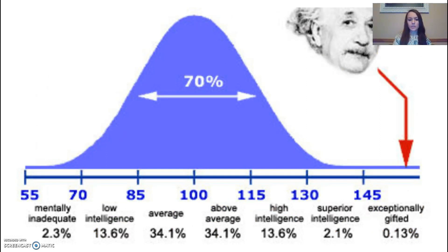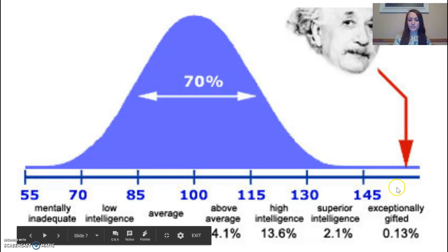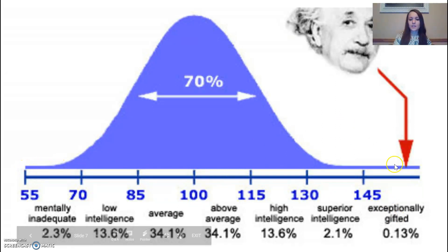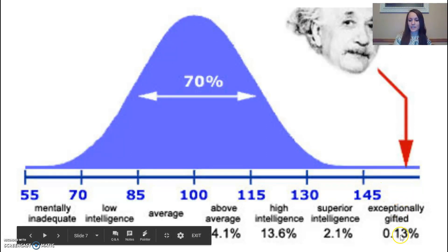Here's a picture that gives you an idea of where Albert Einstein would fall. If this is IQ scores, he falls way out here — this is statistically significant. If he's falling way out there, that's a big deal. He is out in the exceptionally gifted range.